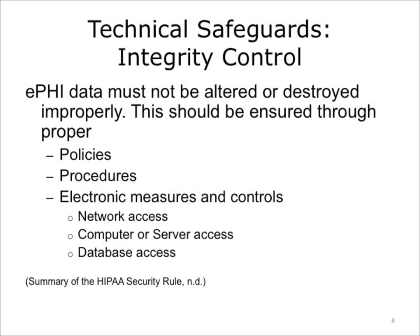Your EHR software must have policies, procedures, and electronic controls to ensure that ePHI is not improperly altered or destroyed. This should be automatic and verifiable. The electronic measures may be implemented at the network level through transmission security, at the operating system level through authentication and authorization controls, or at the patient record level through database authentication and data integrity controls — preferably a combination of all three.